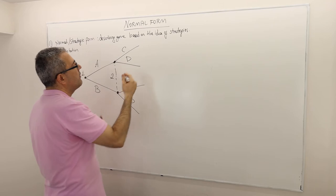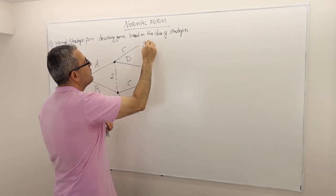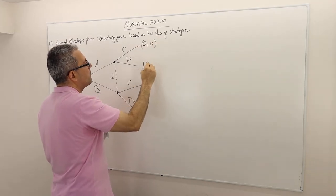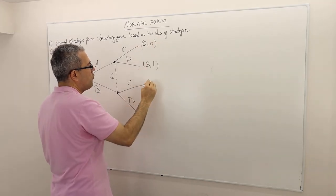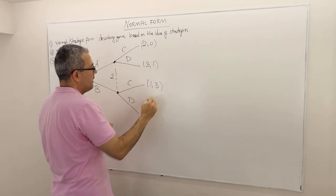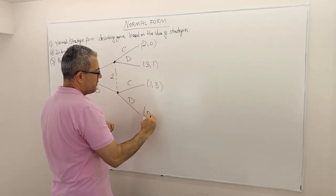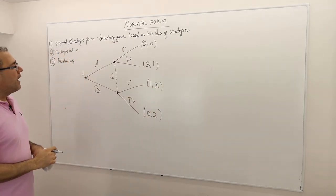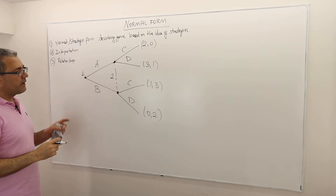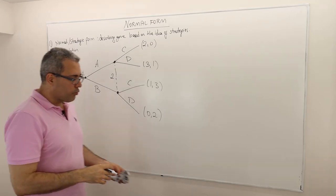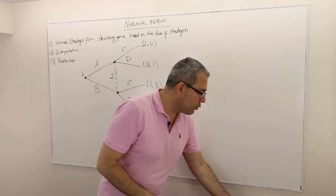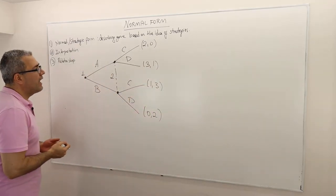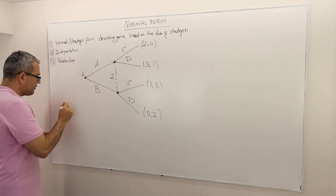The payoffs are 2, 0, 3, 1, 1, 3, and 0, 2. So in this framework, how do we first write down the strategies?